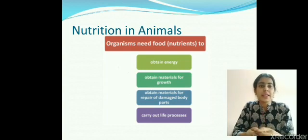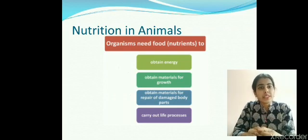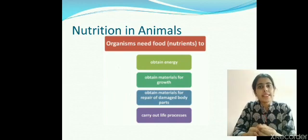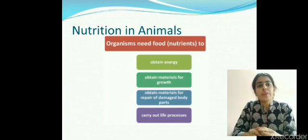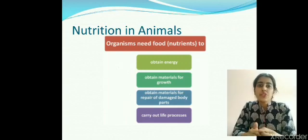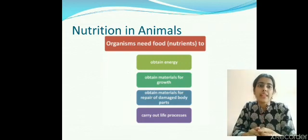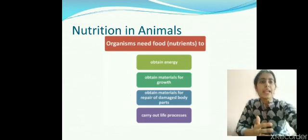Once an organism has consumed food, what happens next? The food needs to be digested. Why does food need to be digested? Because the food we consume exists in complex forms. This complex form needs to be reduced to simpler forms so that our body is able to absorb the nutrition. Our nutrients are absorbed when the food is converted to simpler forms. That is why food needs to be digested.